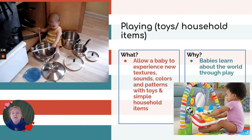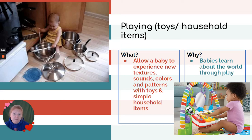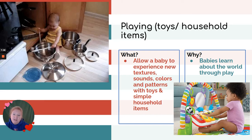Playing: babies and children learn about the world through play, but it doesn't have to be fancy toys. You can allow the baby to experience all kinds of things within safe parameters — textures, colors, sounds, patterns. Babies love wooden spoons and pots and pans and making noise. It doesn't have to be complicated; it just has to be safe. Babies can learn about the world through play using regular household items.